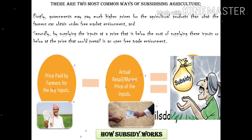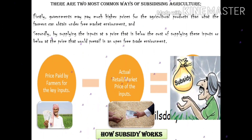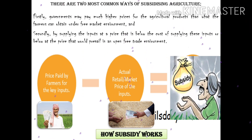The price paid by the farmer minus the actual retail price of the input is equal to the subsidy. All the farmers receive a subsidy on the price of the product.